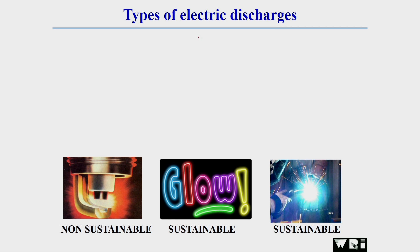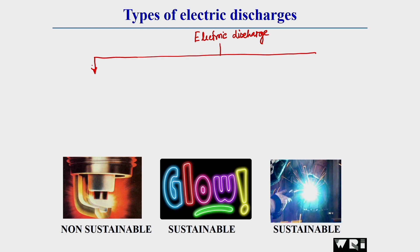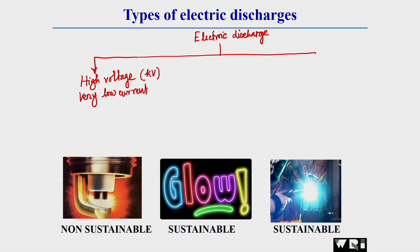First we should know what are the different types of electric discharge. Electric discharge is categorized into three different categories. The first category is high voltage, very low current electric discharge — the voltage can be in the range of kilovolts and the current in the range of microamperes.